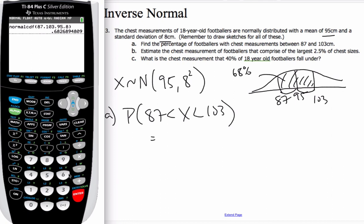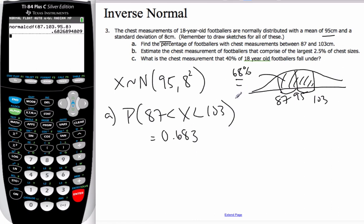And when I do that, I end up with 0.683, three significant figures. And this is just an estimate from the empirical rule, and it helps us to make sure we're on the right track.